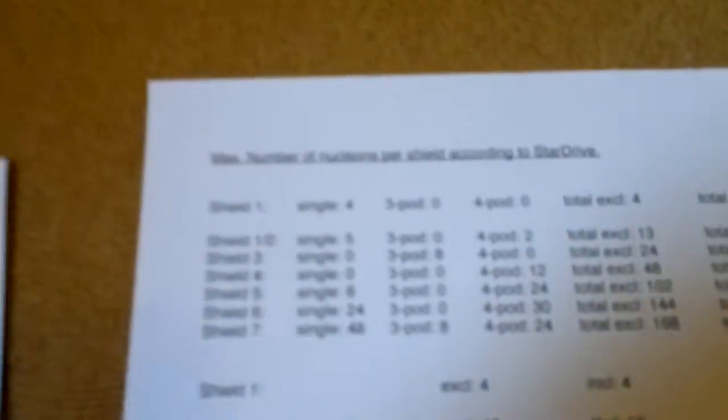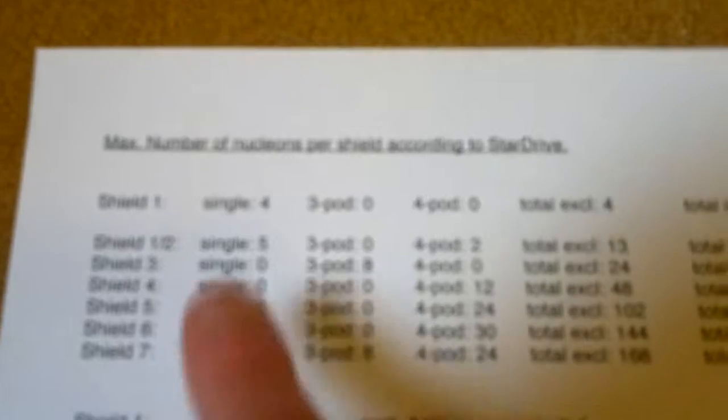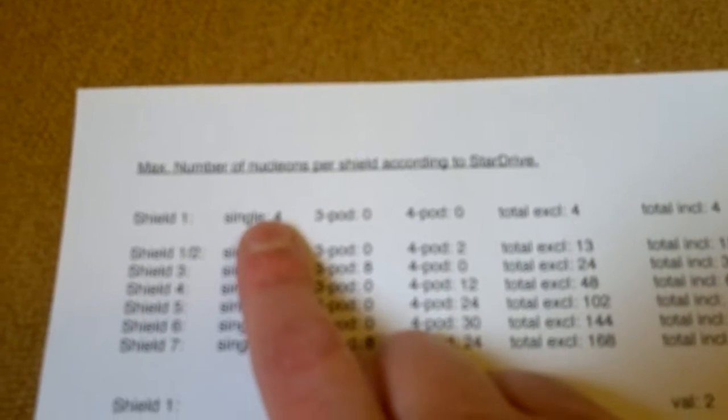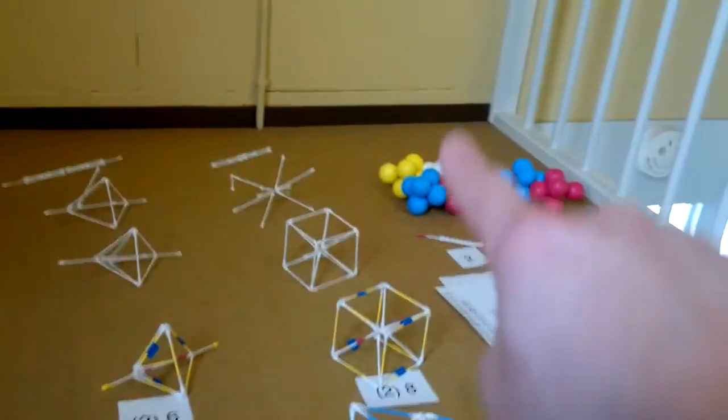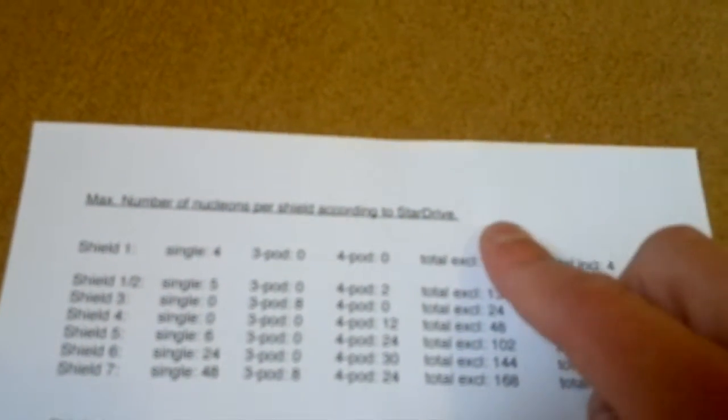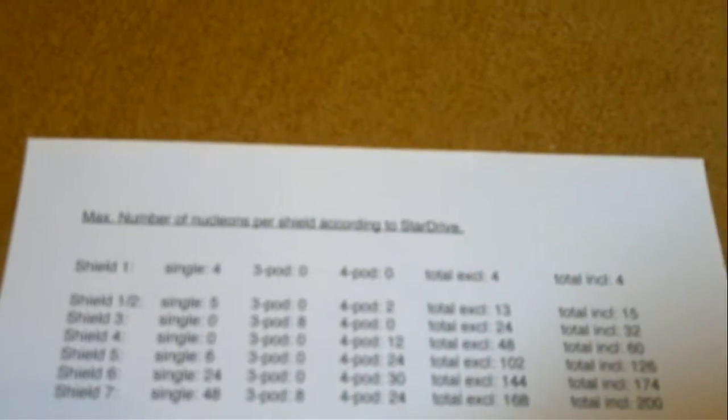This is a little list I made. You can find it on my website. Shield-1, made out of 4 nucleons max. That's your helium. So this is a list of the number of atoms, excuse me, the number of nucleons an atom is made of.